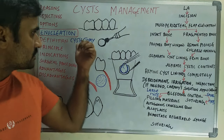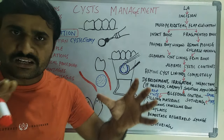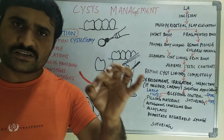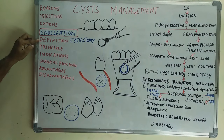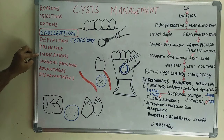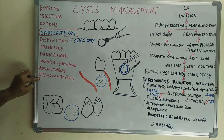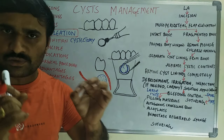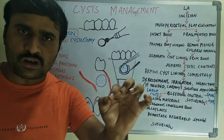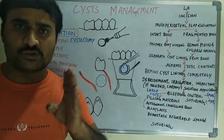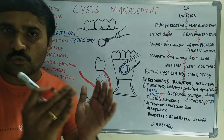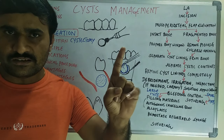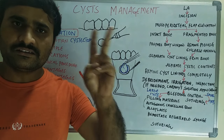Enucleation is also called cystectomy, meaning complete removal of the cyst. By definition, it is the surgical procedure in which there is complete removal of the cystic lining. This is very important — complete removal of the cyst lining — and the wound is closed with sutures to allow healing by primary intention.